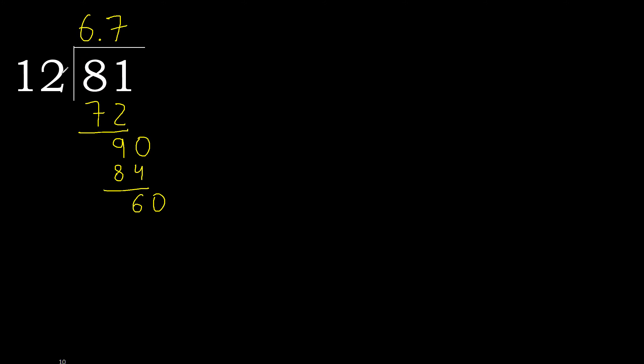12 multiply by 5 is 60, which is not greater. Subtract: 60 minus 60 equals 0. Therefore finish. 81 divided by 12 is 6.75.